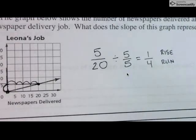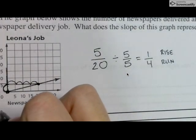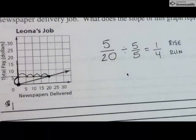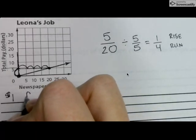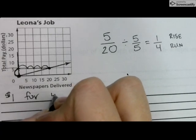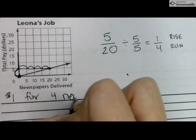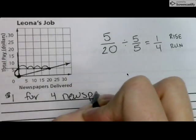So, what does 1 represent here? Total pay. So, if pay is in dollars, I get $1 for how many newspapers? 4 newspapers delivered.